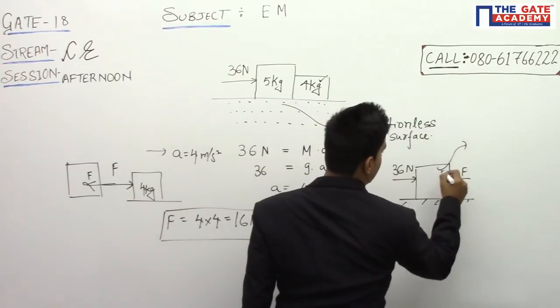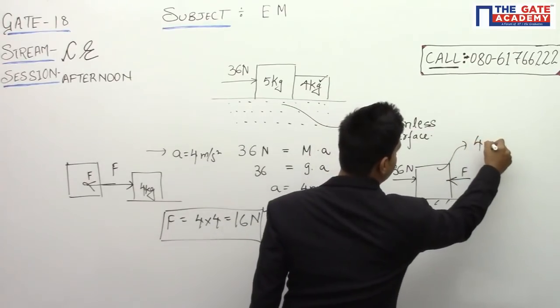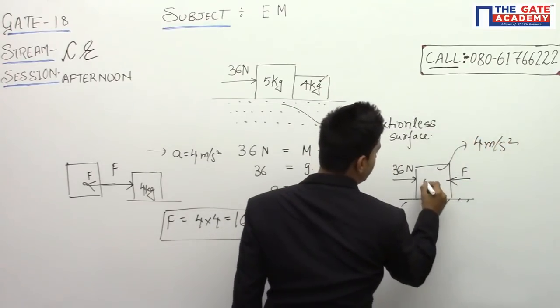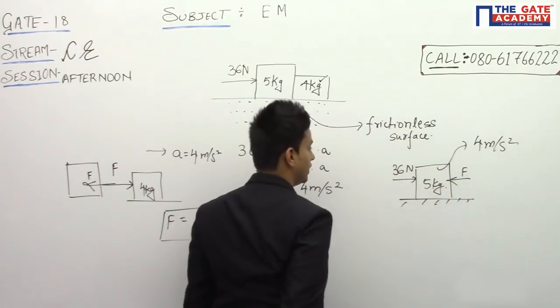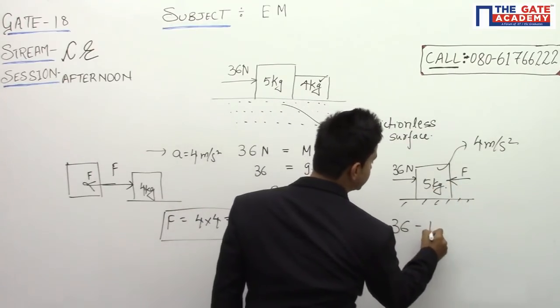So this was the body, 36 was applied over here, and there should be force F reacting in this direction. And that is moving with an acceleration of 4 meters per second squared, and that is a body of 5 kg. So here you will say that 36 minus F